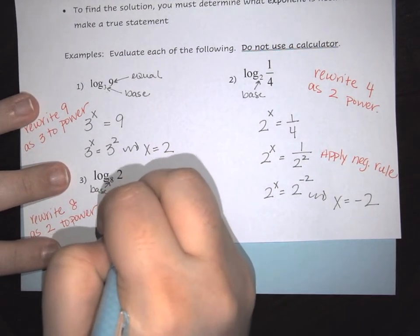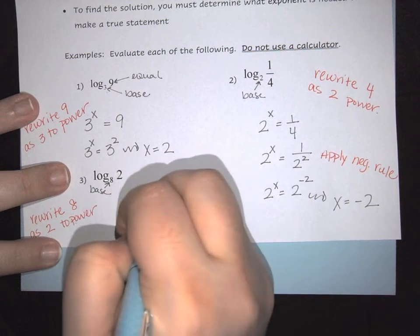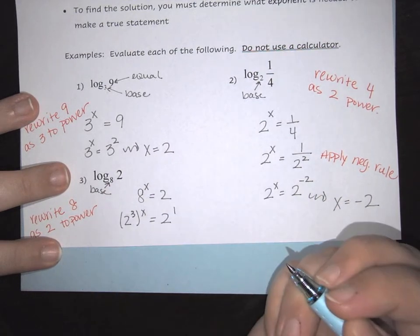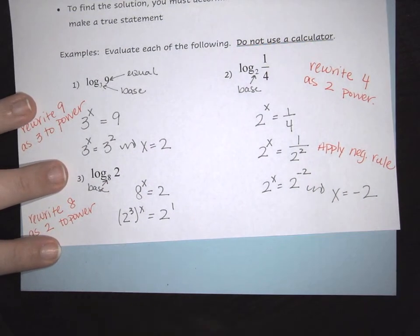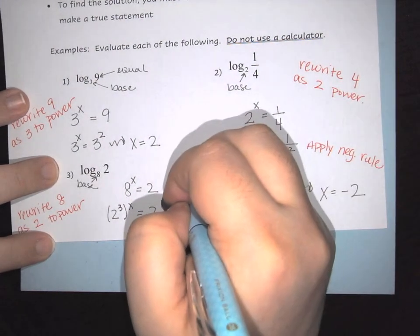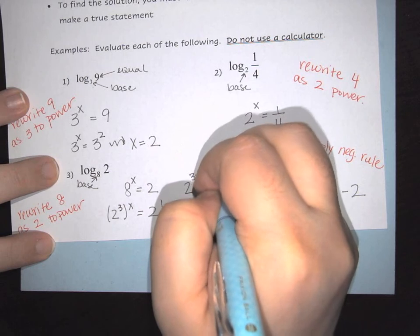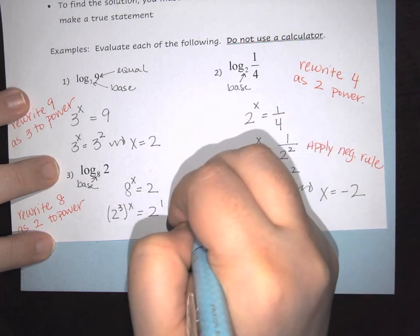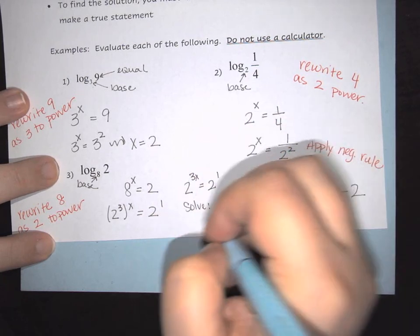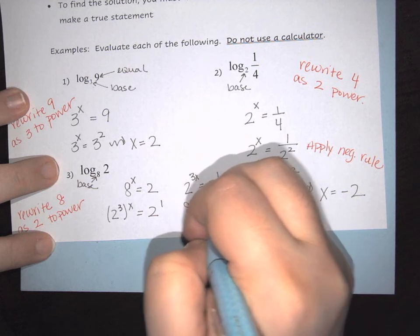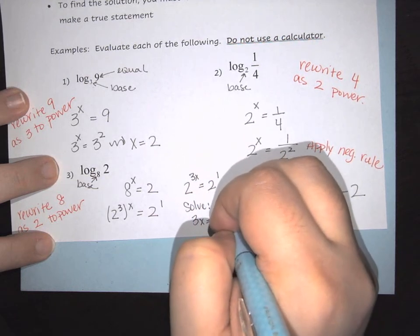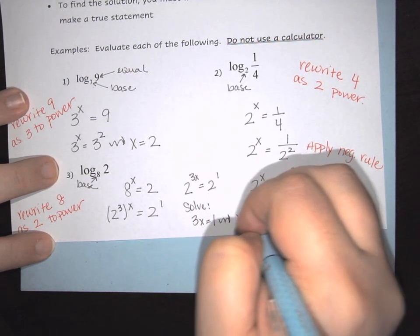So this would be 2 cubed to the x equals 2 to the first. Here we would go ahead and do our math. We would have that 2 to the 3x is equal to 2 to the first. We're going to then solve that 3x equals 1, so x equals 1 third.